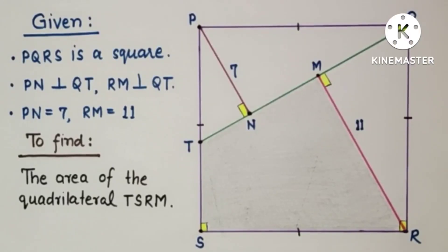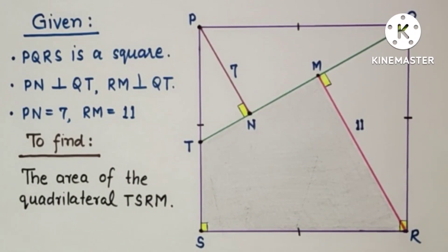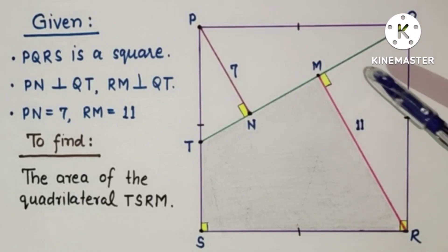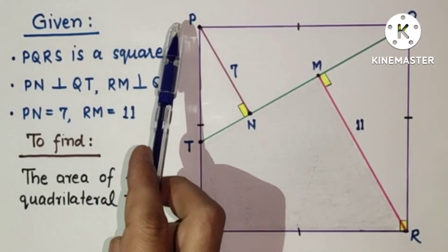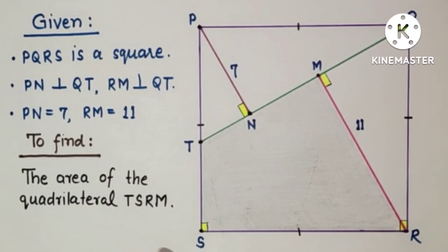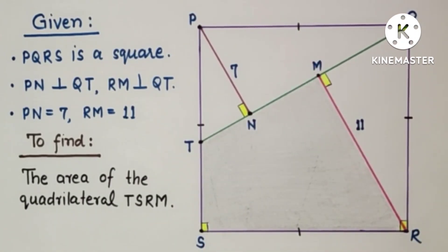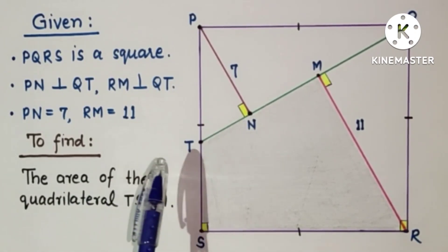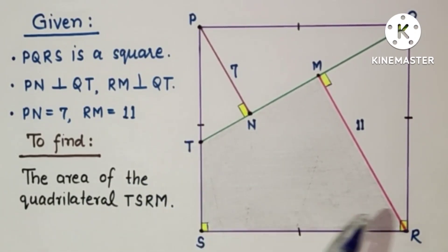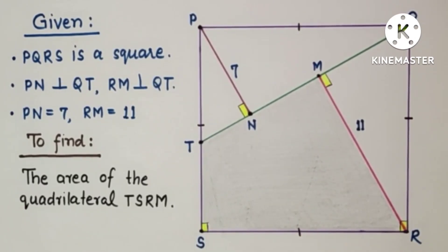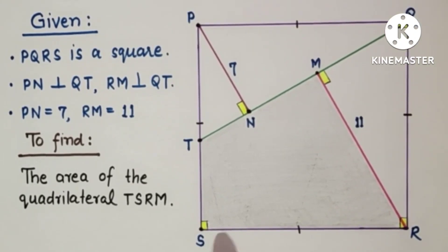Hello friends and viewers, welcome to my channel. In this problem, we are given a square PQRS in which PN is perpendicular to QT, RM is perpendicular to QT. The length of perpendicular PN is 7 units and the length of perpendicular RM is 11 units. We have to find the area of the quadrilateral TSRM, the shaded portion. Before looking at the solution, first try yourself.